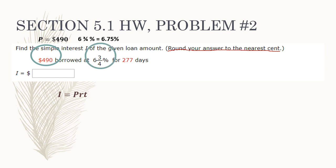Six and three-quarters percent is the same thing as 6.75%. To figure that out, just type 3 divided by 4 in your calculator: three divided by four equals 0.75, so six and three-quarters equals 6.75. Now convert to decimal form by moving the decimal two places to the left, which gives us R equals 0.0675.